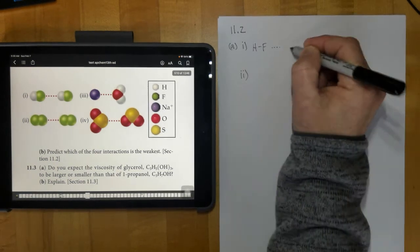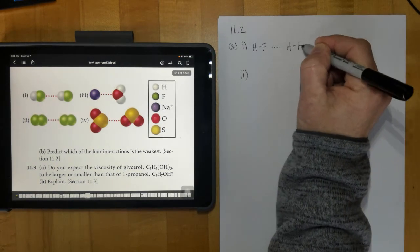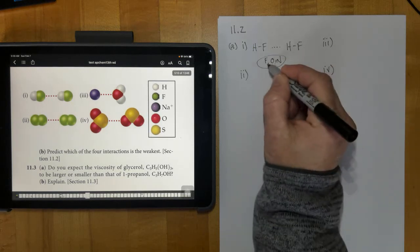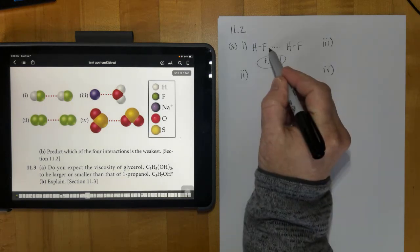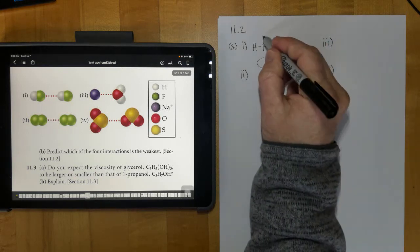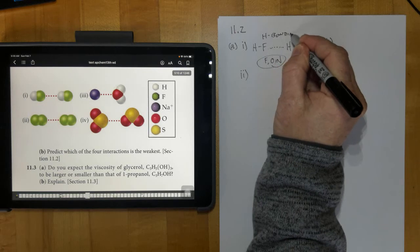And so since we have an H connected to an F, O, or an N, remember that allows us to have what's called this hydrogen force or hydrogen bonding interaction between these two. So H bonding is for the first one.